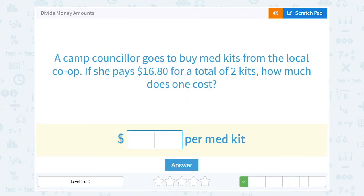A camp counselor goes to buy med kits from the local co-op. If she pays $16.80 for a total of two kits, how much does one cost?